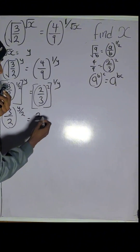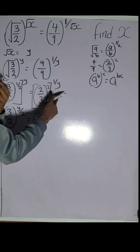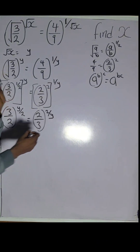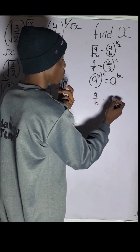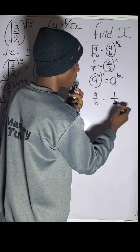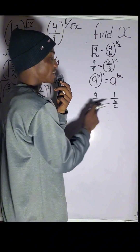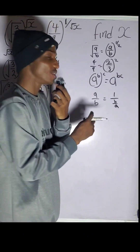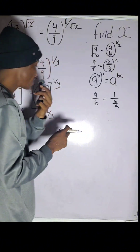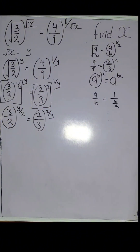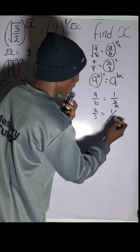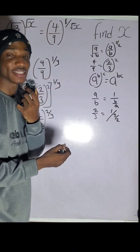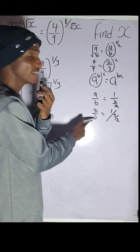Now recall that a over b equals the inverse of b over a. So the inverse of 3 over 2 gives you 2 over 3. Therefore, 2 over 3 can be rewritten as 1 over 3 over 2 — that is, the inverse of 3 over 2 equals 2 over 3.